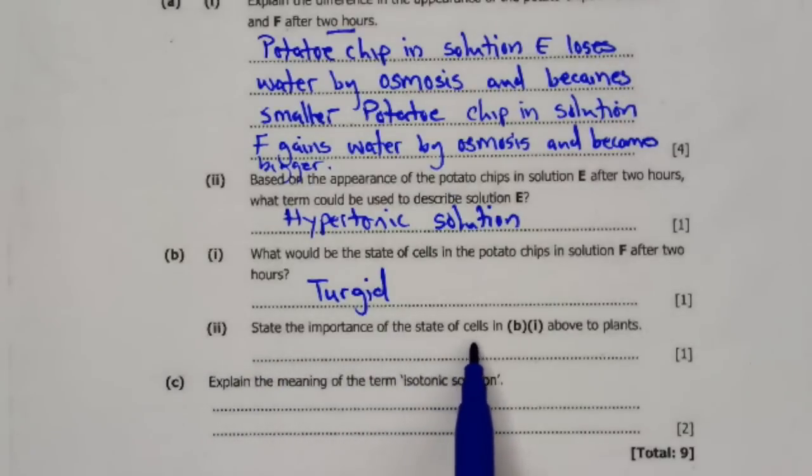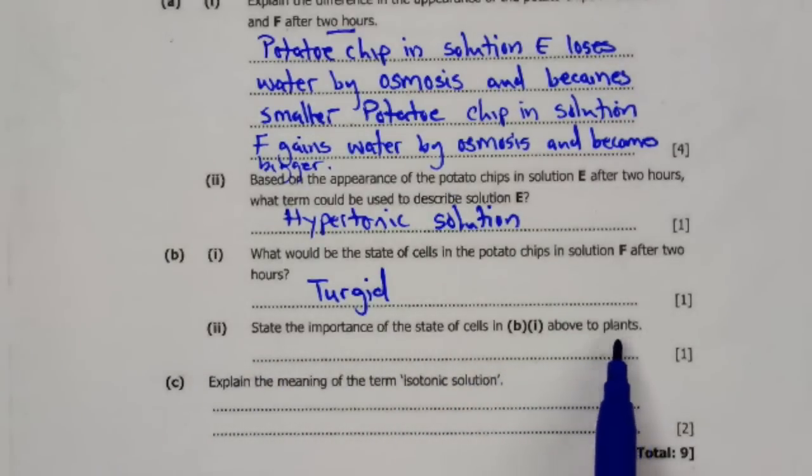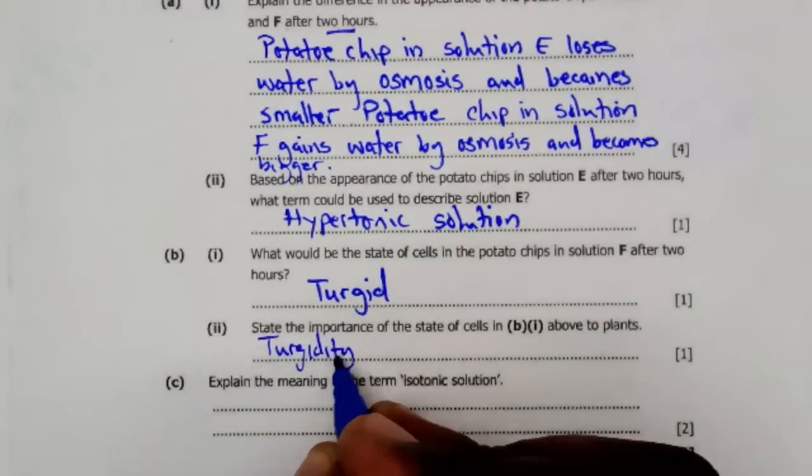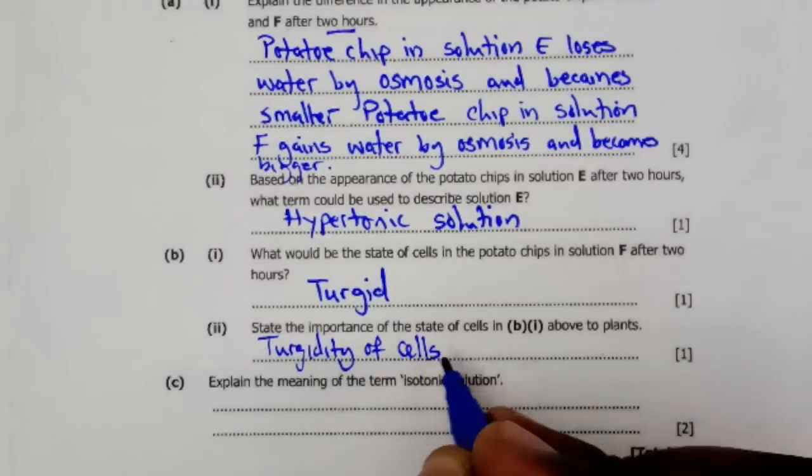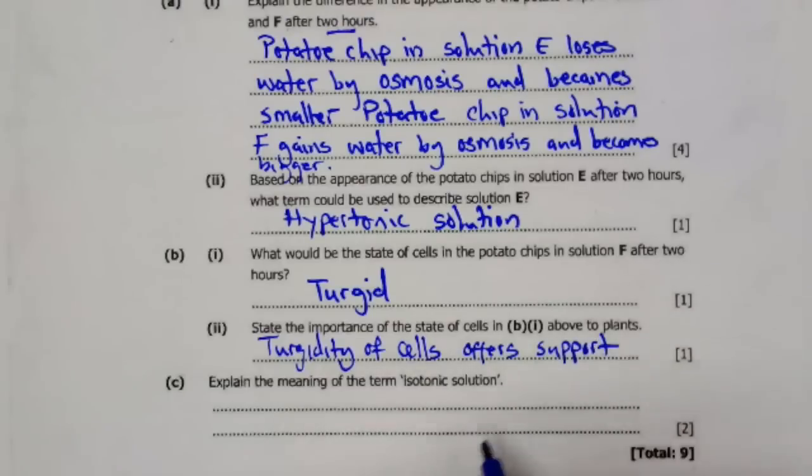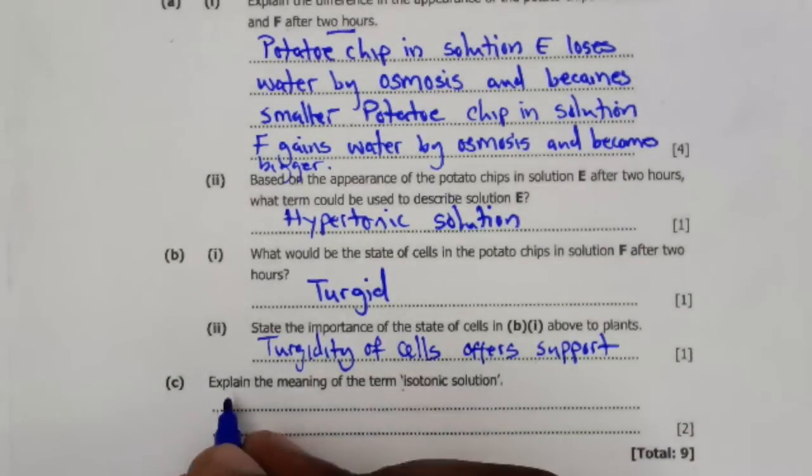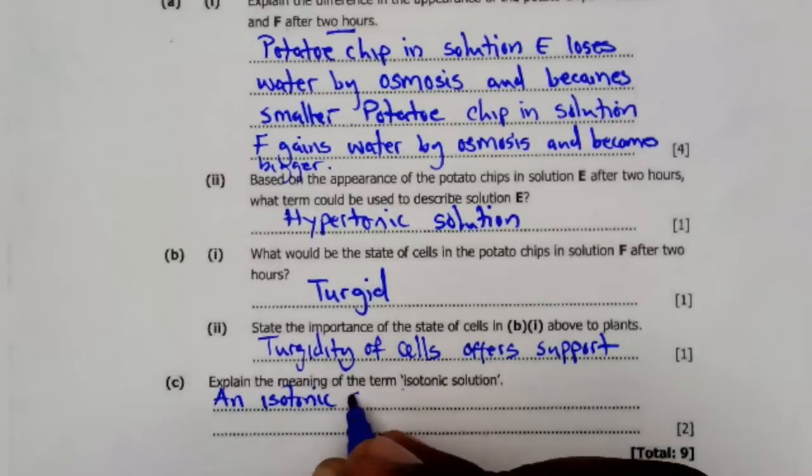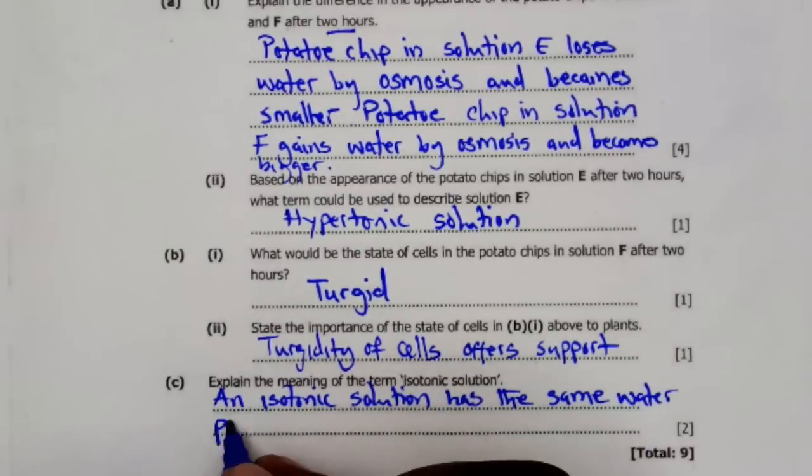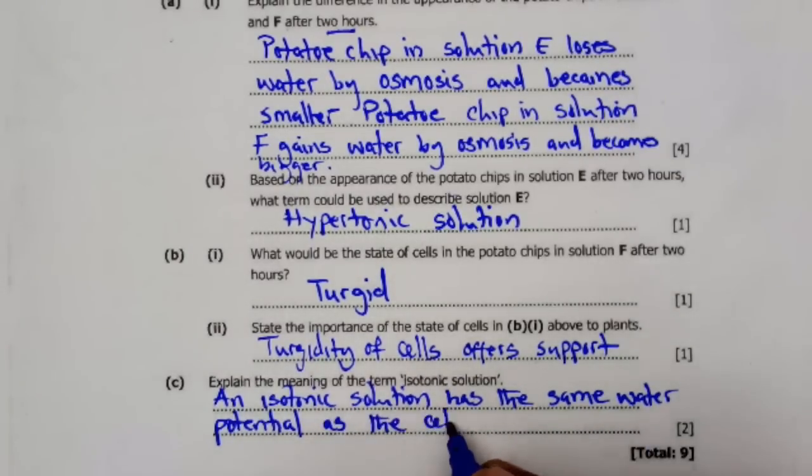B2: State the importance of the state of cells in B1 above to the plants. Turgidity of cells offers support. C: Explain the meaning of the term isotonic solution. An isotonic solution has the same water potential as the cell cytoplasm.